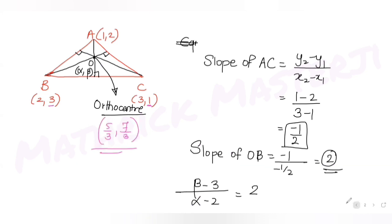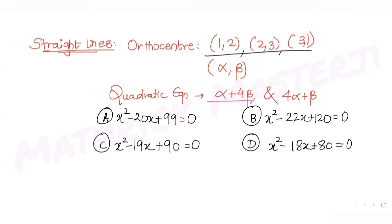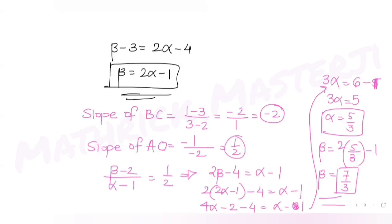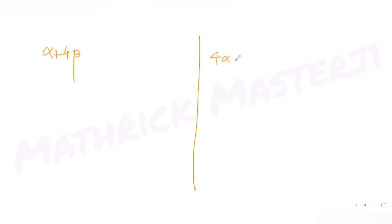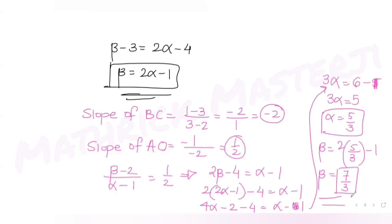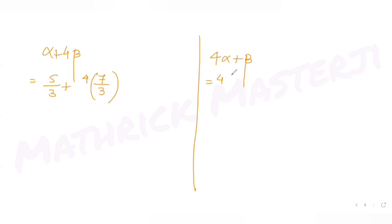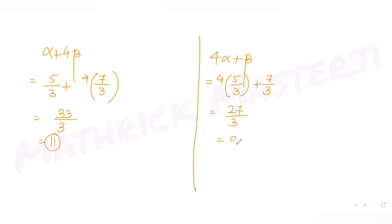The question asks for a quadratic equation with roots alpha + 4 beta and 4 alpha + beta. Substituting alpha = 5/3 and beta = 7/3: alpha + 4 beta = 5/3 + 28/3 = 33/3 = 11, and 4 alpha + beta = 20/3 + 7/3 = 27/3 = 9.